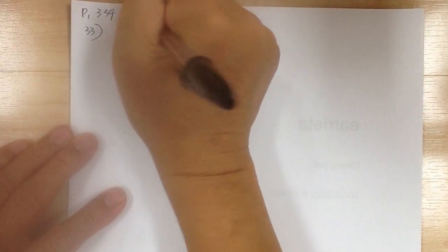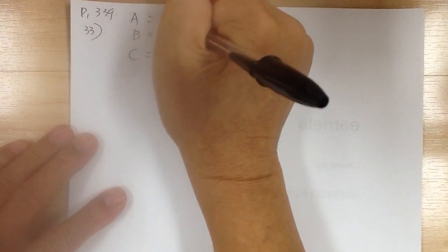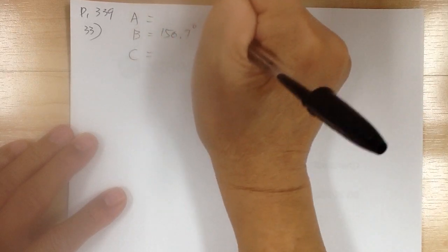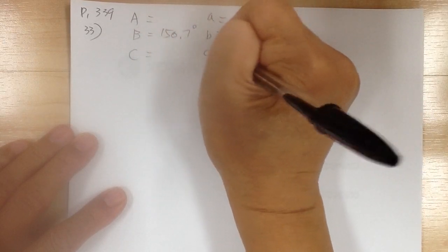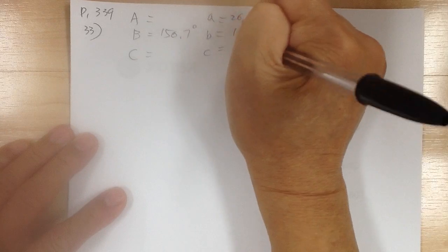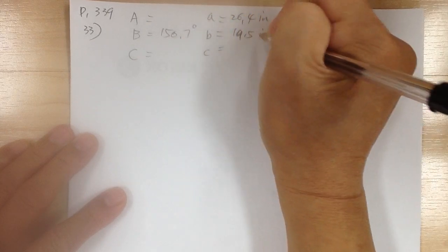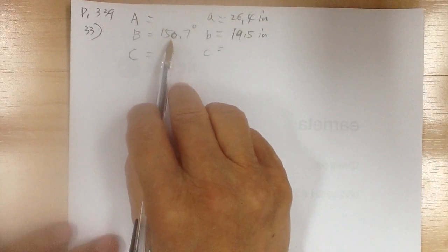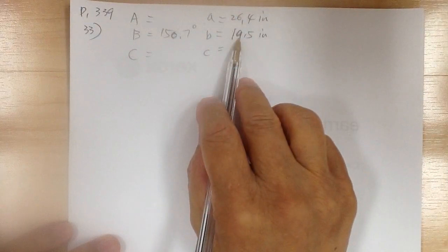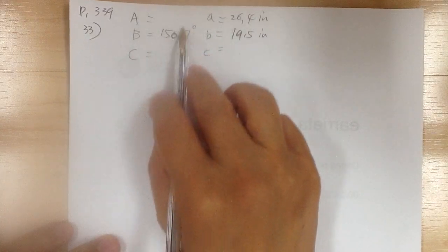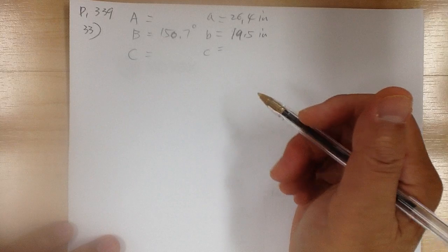Number 33. A is 150.7 degrees, a is 26.4 inches, and b is 19.5 inches. Right away, you know there will be no solution. Because bigger angle has to face the longer side — a is bigger than b, so angle A has to be bigger than angle B. But if angle A is already 150.7 degrees, then three angles would be more than 180. So right away, you know there will be no solution.